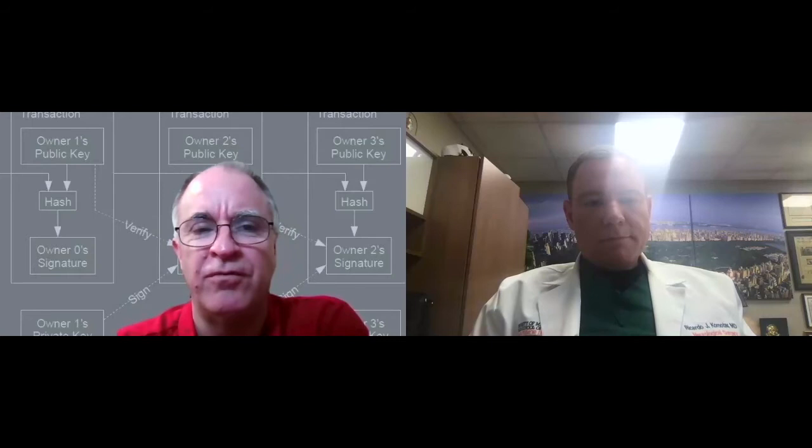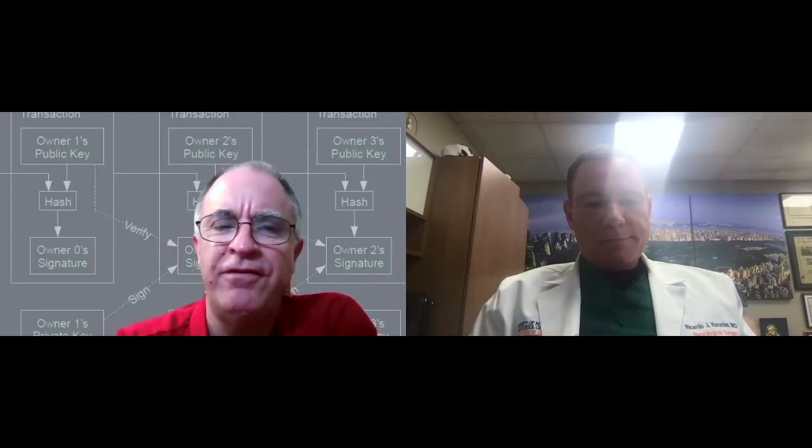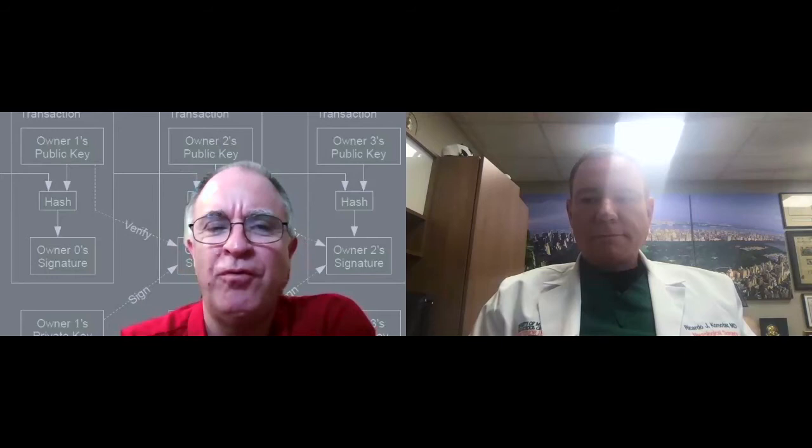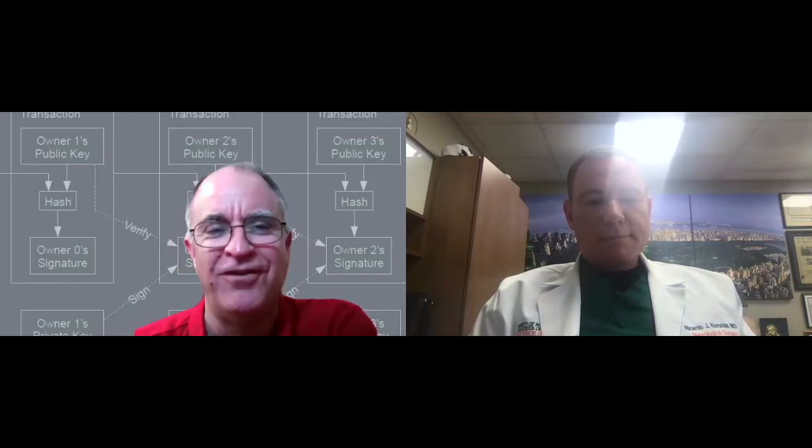And then going down the list, I think probably the third biggest would be Tether. Tether is what's called a stable coin. One Tether should equal one US dollar. And so it's very convenient as a medium of transacting, because people still like to refer to the unit of account being money from the real world, from the United States, mostly.